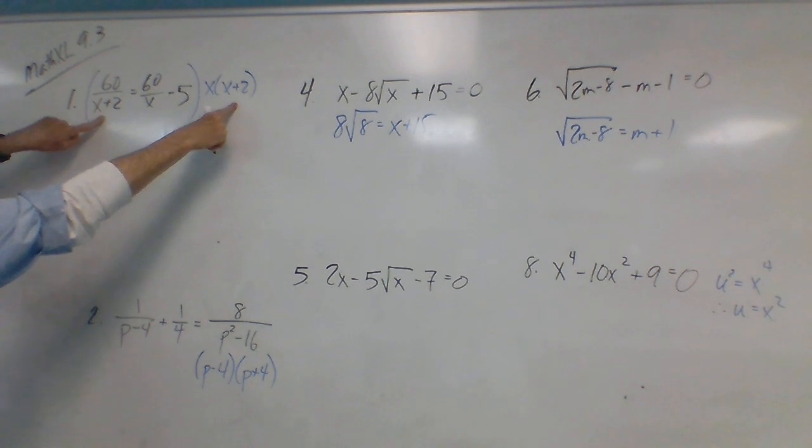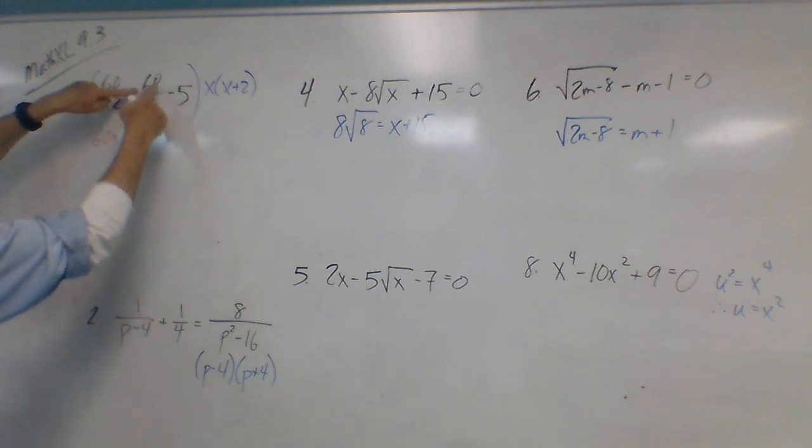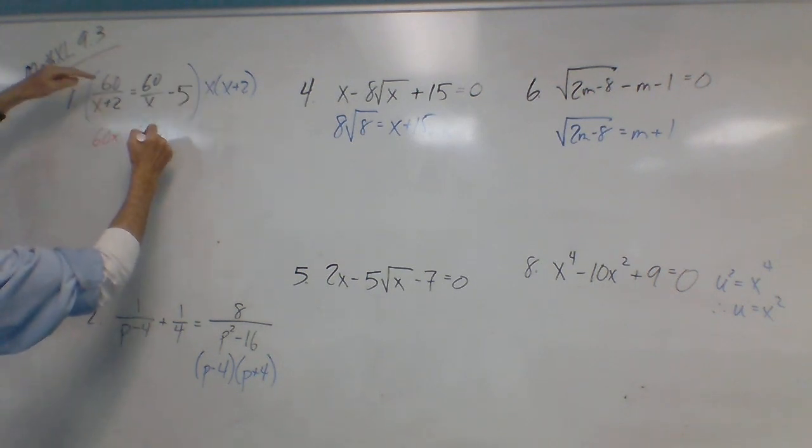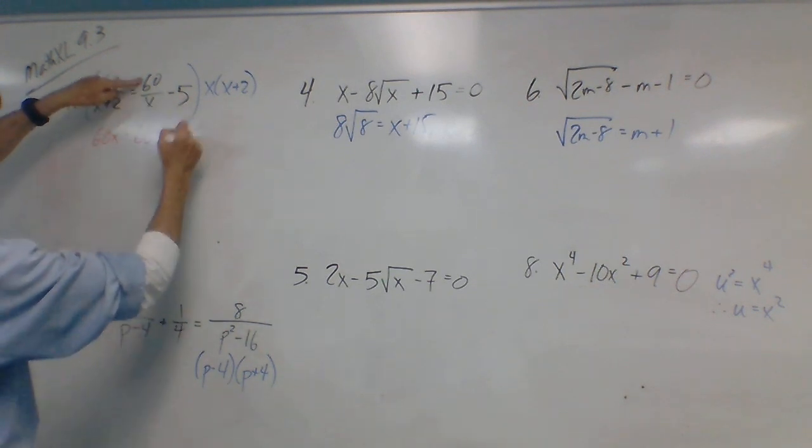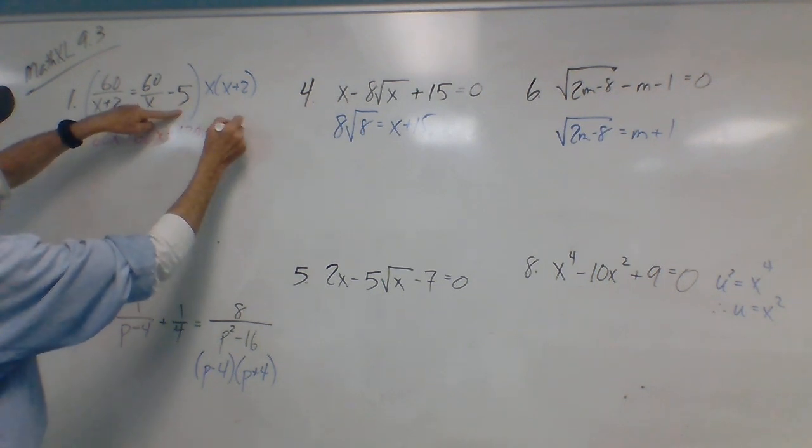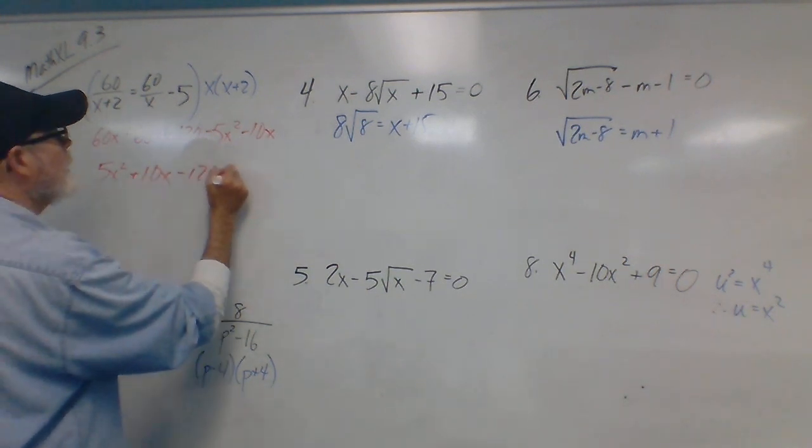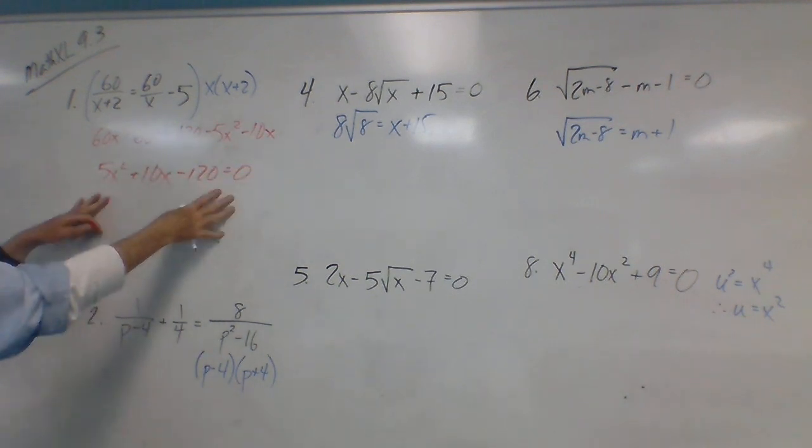So here's our LCD, and we would multiply through by the LCD. So when I do that, x squared, x plus 2 is going to cancel out here, so I'm going to have 60x equals, x is going to cancel out, so I would have 60x here plus 120 and here. I'm just going to multiply this whole thing out. I'd have minus 5x squared, 2x minus 10x. I've got a bunch of like terms to combine. I'm going to do those and move everything over to one side.